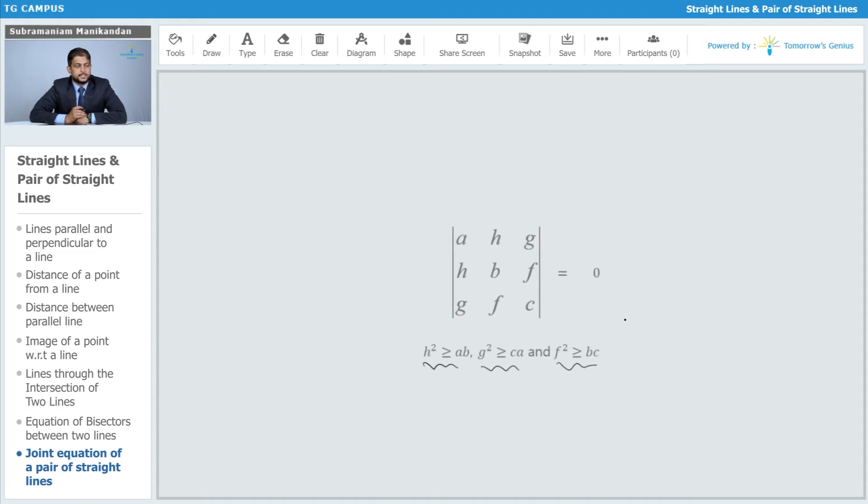Now this is a slightly hard determinant to remember. You have to remember that a, h, and g come in the first row, h, b, f in the second row, and g, f, c come in the third row. You can use a memory aid to remember this: a, h, g, h, b, f.